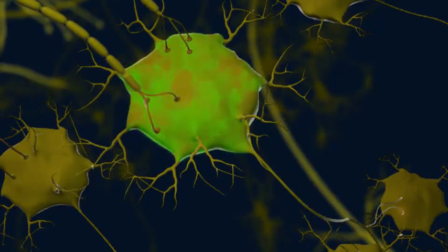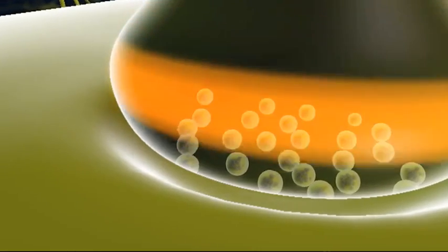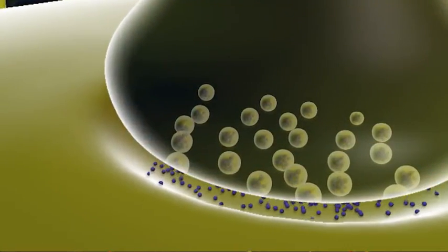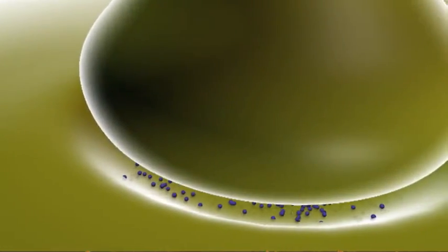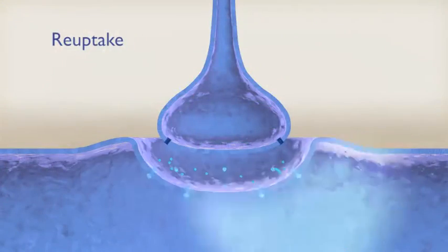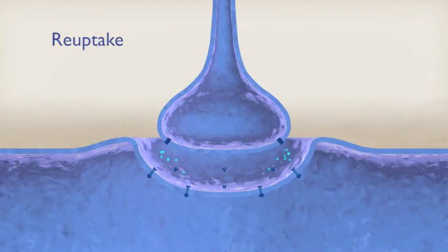The postsynaptic potential effect of neurotransmitter release is terminated in one of two ways. The first is known as reuptake, where the neurotransmitter is taken back up into the sending neuron and recycled for release following another action potential.